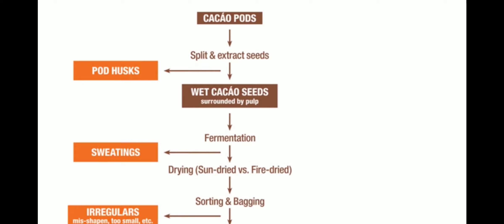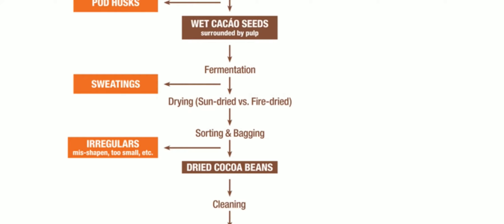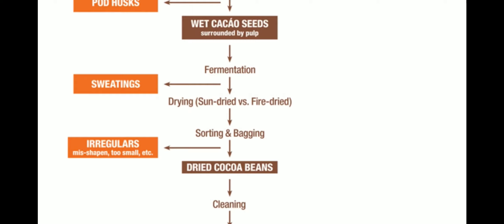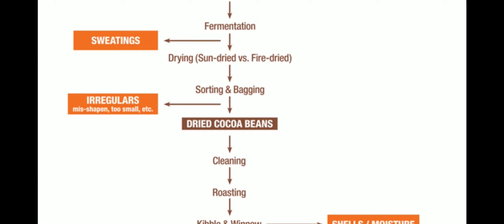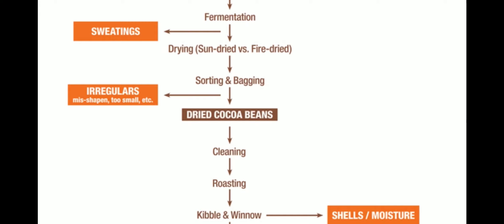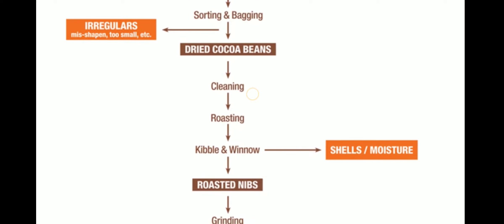So first in the flow diagram: we have cocoa pods, then splitting of cocoa pods and extracting seeds — pod husks are wastage. Then wet cocoa seeds are there surrounded by pulp. Fermentation in sun with banana leaf covering, mixing periodically, takes about a week. Then drying is done by sweating — meaning evaporation of water. Then sorting and bagging: irregular, misshaped, and too-small beans are removed and sorted out, and the bagging is done to ship to the chocolate factory.